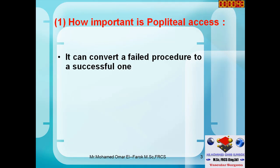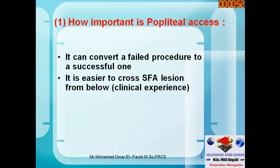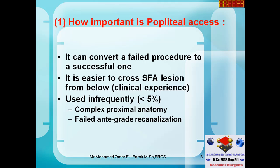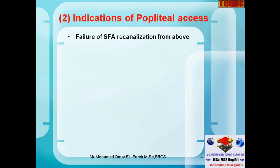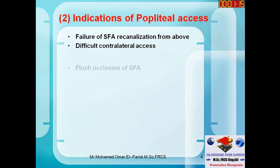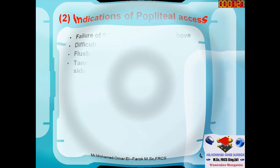Popliteal axis is extremely important because it can convert a failed procedure from the upper end into a successful one. It is also easier to pass SFA occlusion from below rather than from above. You will use popliteal axis in less than 5% of cases, especially in failed antegrade. The number one indication is failure of SFA re-canalization from above, or difficult contralateral axis for any reason, flush occlusion to the superficial femoral artery, and tandem lesions to SFA occlusion especially with iliac lesions.